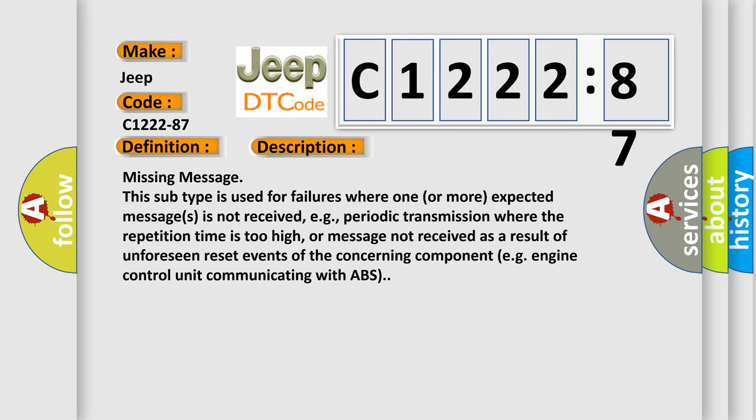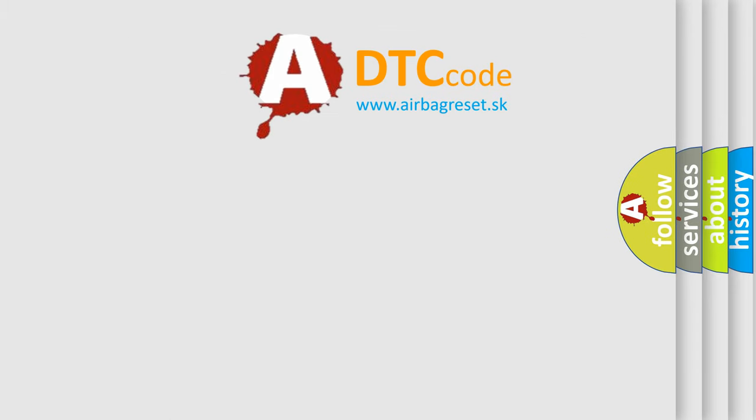And now, here is a short description of this DTC code. Missing message — this subtype is used for failures where one or more expected messages is not received, for example, a periodic transmission where the repetition time is too high, or a message not received as a result of unforeseen reset events of the concerning component, such as an engine control unit communicating with ABS.